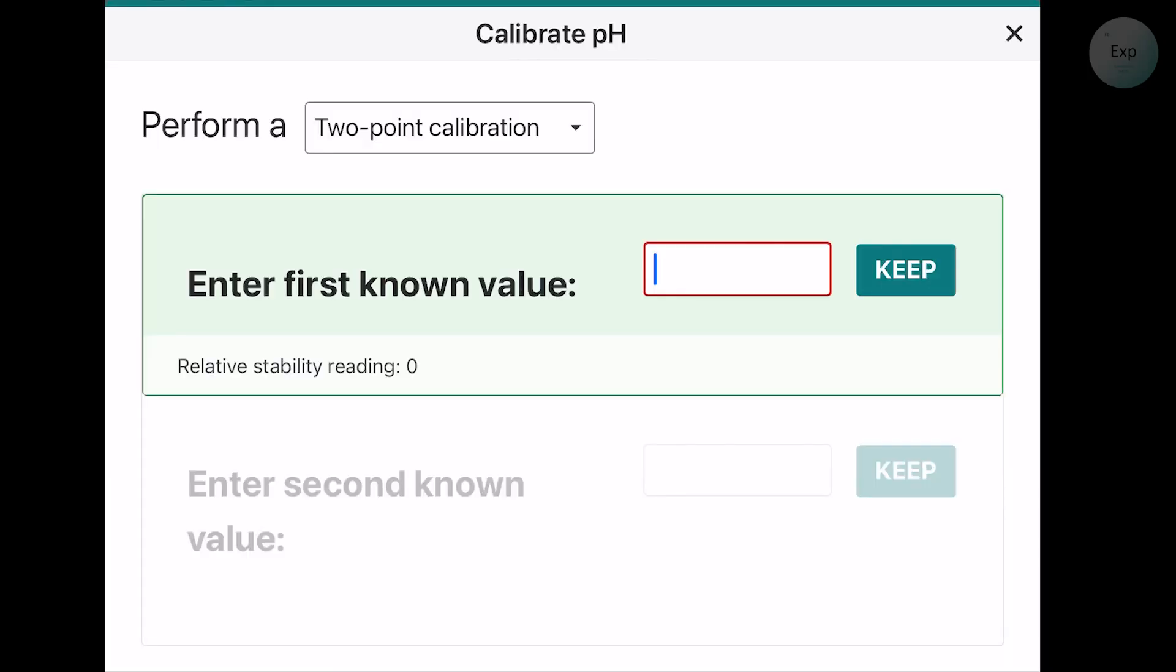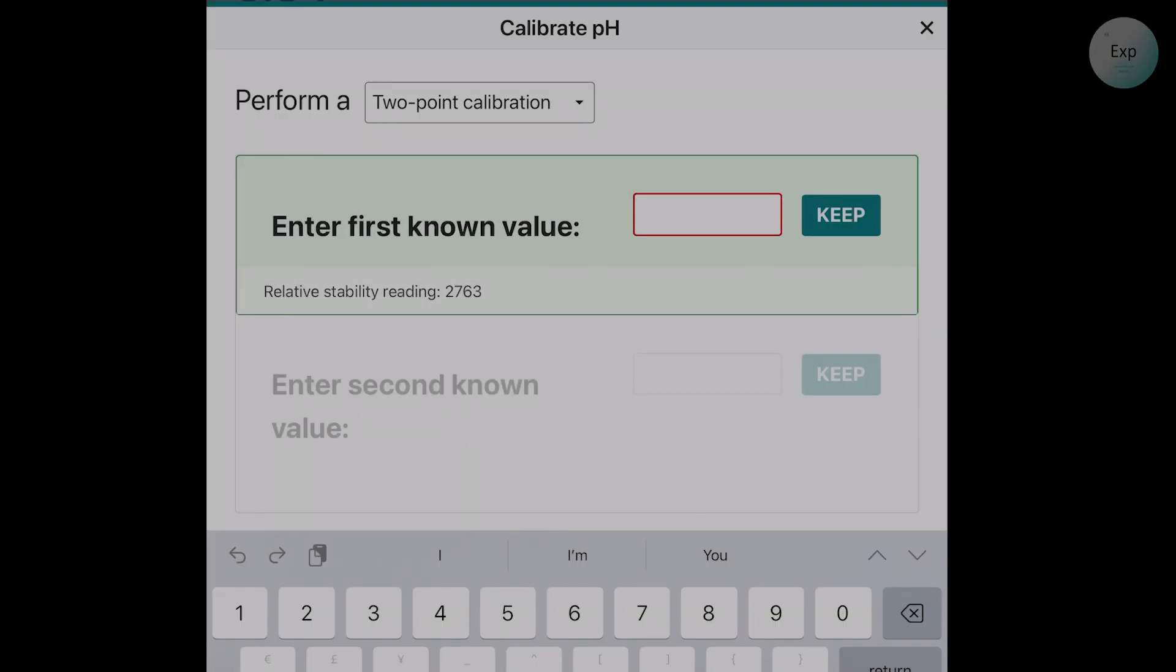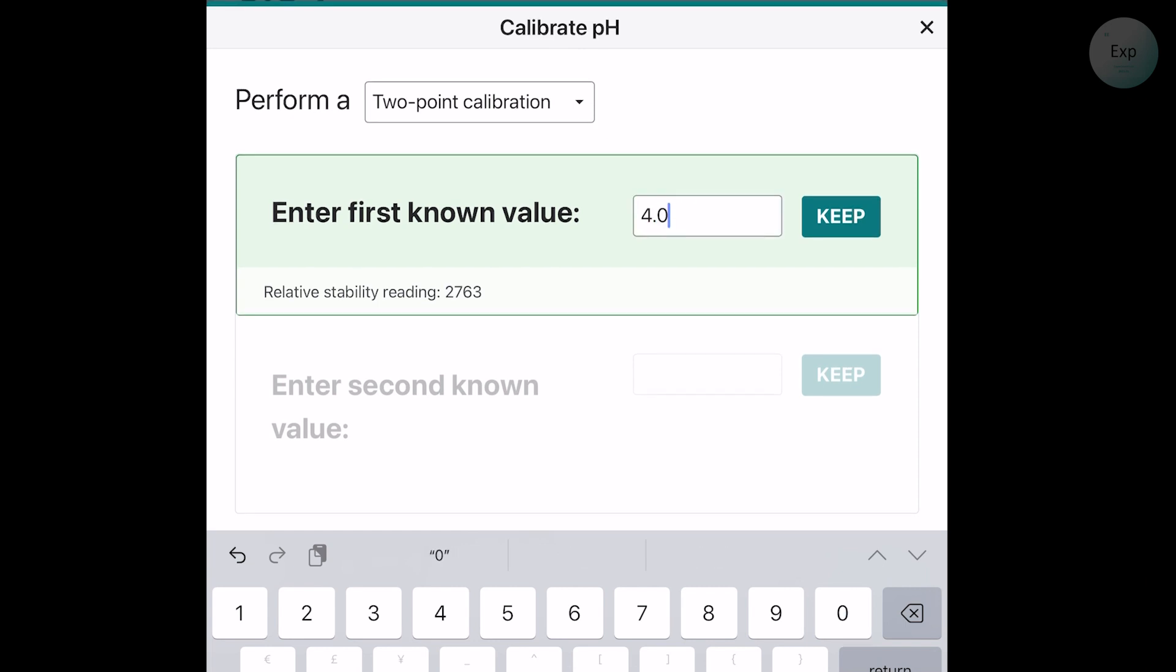We press calibrate and when the pH probe sat there for at least one minute, then we're going to enter the first known value, which is the 4.0 pH. Then we press keep.